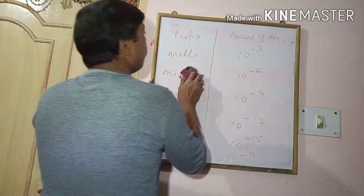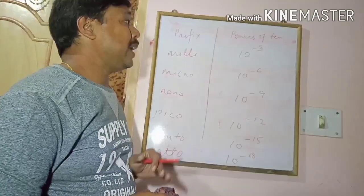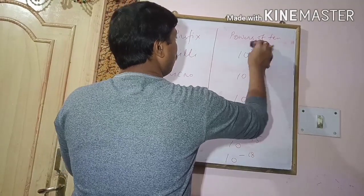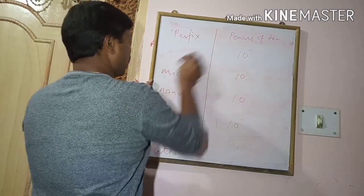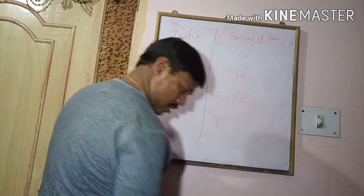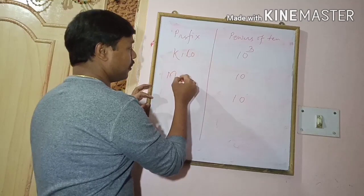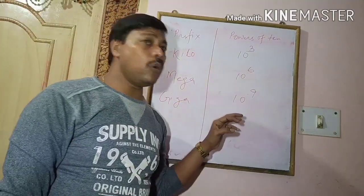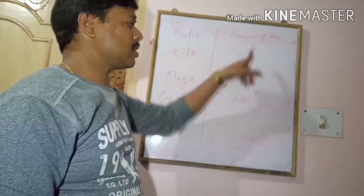These are the prefixes used to express smaller quantities. For bigger quantities, we use: kilo for 10 to the power 3, mega for 10 to the power 6, and giga for 10 to the power 9. So for bigger units, we use these prefixes along with the corresponding powers of 10.